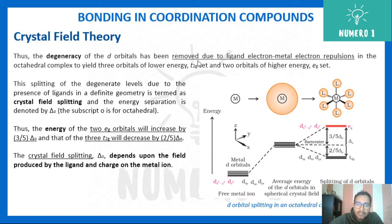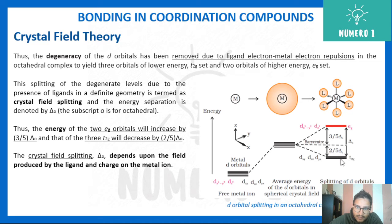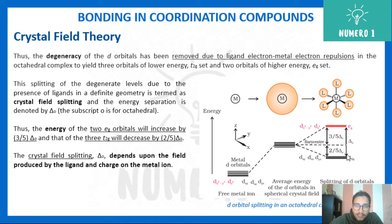Thus the degeneracy of the d orbitals has been removed. Originally all d orbitals were at the same energy level. As the ligand approaches, the field splits them into a lower t2g level containing dxy, dxz, and dyz, and a higher eg level containing dx²-y² and dz². The energy difference between these two levels is known as delta_o, where 'o' stands for octahedral splitting.